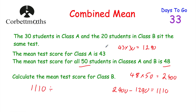We know there are 20 students in class B. So if we divide 1,110 by 20, we can find the mean. 1,110 divided by 20 equals 55.5. So the mean test score in class B was 55.5.